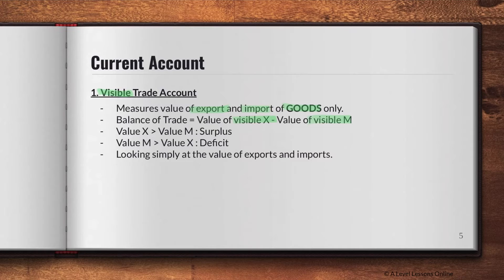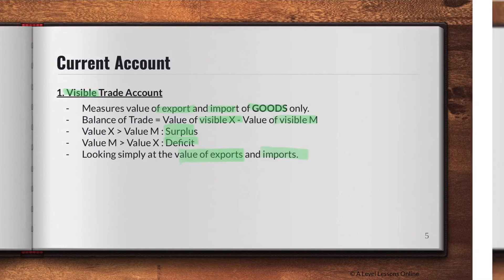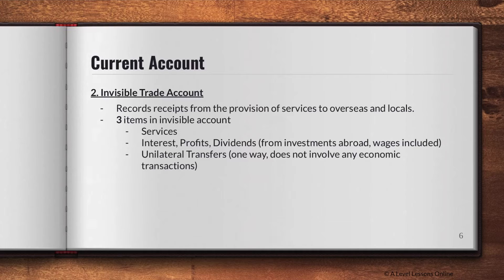We're simply looking at the value of exports and imports. Anything visible means it is tangible — trading cards, fans, shoes, clothes — these are all tangible goods registered in your current account under the visible trade account. Moving to the invisible trade account: it records receipts from the provision of services to overseas and locals. There are three items in the invisible account. First is services — for example, firms overseas tendering certain services.